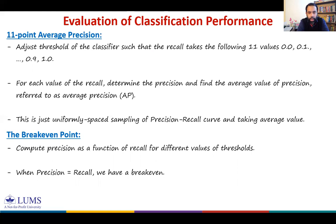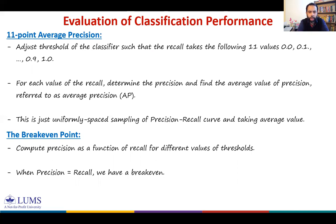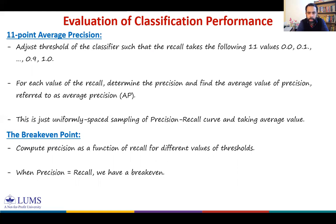The break-even point is the point where precision equals recall. You identify the threshold for which recall equals precision, and that is the break-even point. You can use the break-even point to evaluate classifier performance when you want both recall and precision to have the same value. These are a quick overview of different metrics that combine recall and precision to form a single metric. The most commonly used is F1 score, followed by Matthews Correlation Coefficient.